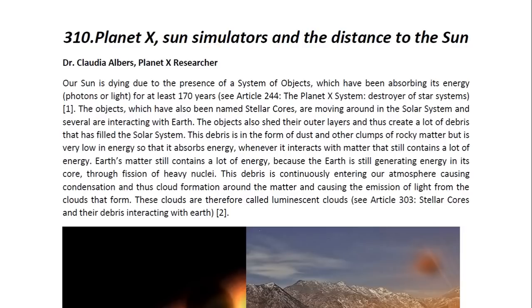Our sun is dying due to the presence of a system of objects which have been absorbing its energy in the form of photons or light for at least 170 years. You may look at Article 244 entitled The Planet X System Destroyer of Star Systems for more details. The objects which have also been named stellar cores are moving around in the solar system and several are interacting with Earth. The objects also share their outer layers and thus create a lot of debris that has filled the solar system. This debris is in the form of dust and other clumps of rocky matter, but is very low in energy so that it absorbs energy whenever it interacts with matter that still contains a lot of energy. And Earth's matter still contains a lot of energy because the Earth is still generating energy in its core through fission of heavy nuclei.